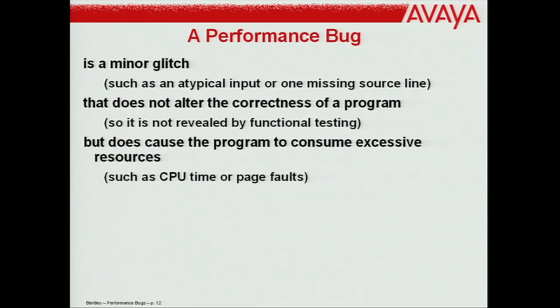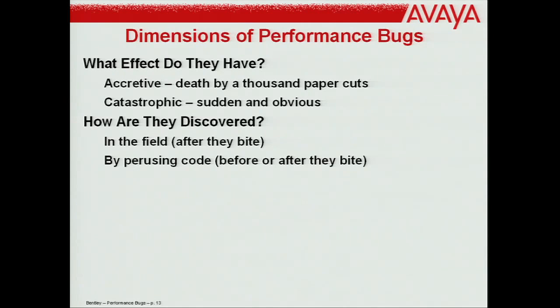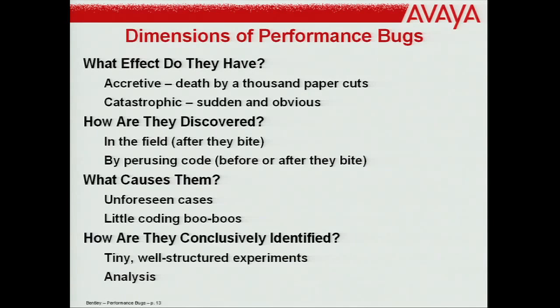What effect do performance bugs have? They can be accretive — death by a thousand paper cuts — or catastrophic: you hit enter and it never comes back. How are they discovered? Sometimes in the field; other times by perusing code. What causes them? Unforeseen cases, little typing boo-boos, leaving out one line. How do you nail them down? Tiny, well-structured experiments — run it two or three times and show that times that should double in fact quadruple.